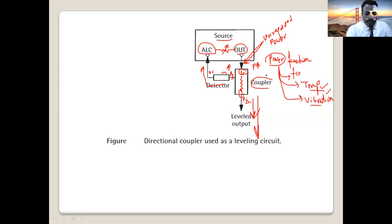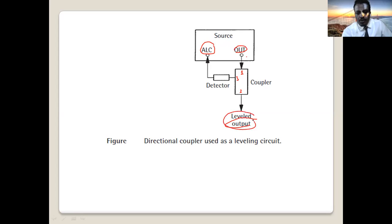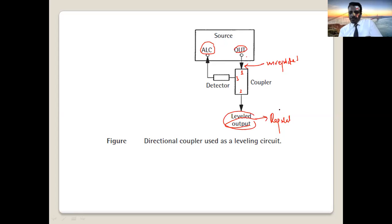The power from the transmitter goes to port 1 of the coupler, then directly to port 2. Port 3 goes back to the ALC — Automatic Level Control. The signal is still transmitted without interruption at port 2. The output here is leveled or regulated, while the input from the transmitter is unregulated. This system converts unregulated power to regulated power — just like a voltage stabilizer converts fluctuating mains voltage to constant voltage.